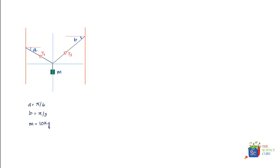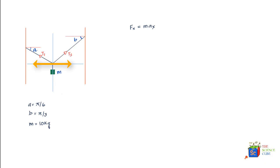To solve this problem, we use Newton's second law of motion: net force equals mass times acceleration. This applies to forces acting in the x or y direction. Since the system is not moving, if we sum all forces in the horizontal (x) direction, it should equal zero because acceleration is zero.